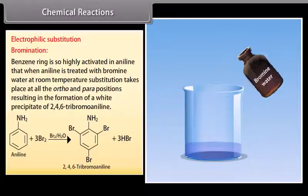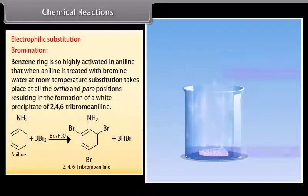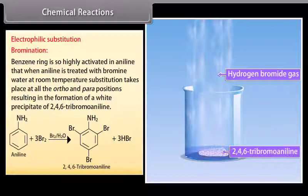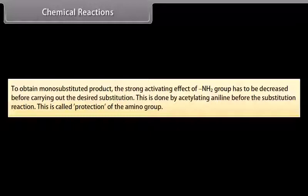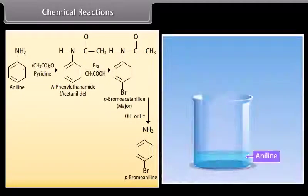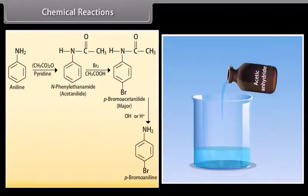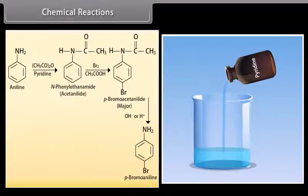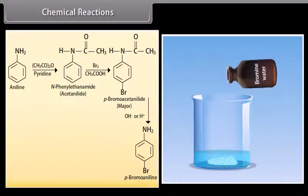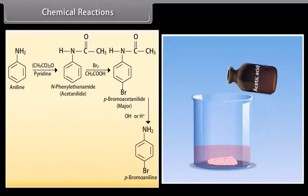Electrophilic substitution — Bromination: The benzene ring is so highly activated in aniline that when aniline is treated with bromine water at room temperature, substitution takes place at all ortho and para positions, resulting in formation of a white precipitate of 2,4,6-tribromoaniline. To obtain a mono-substituted product, the strong activating effect of the NH2 group must be decreased before carrying out the substitution. This is done by acetylating aniline first — called protection of the amino group. Aniline reacts with acetic anhydride and pyridine to form acetanilide, which on bromination gives para-bromoacetanilide, and then hydrolysis yields para-bromoaniline.